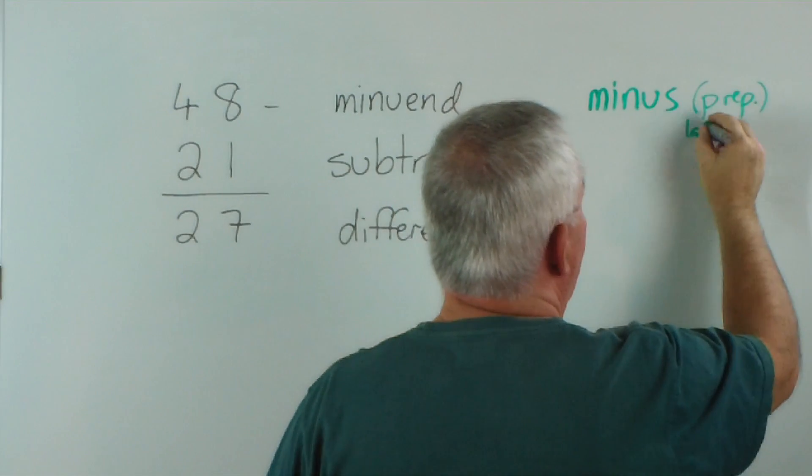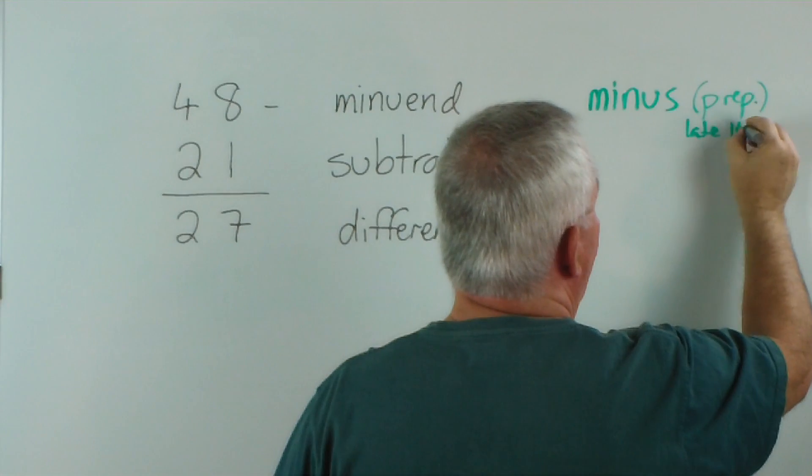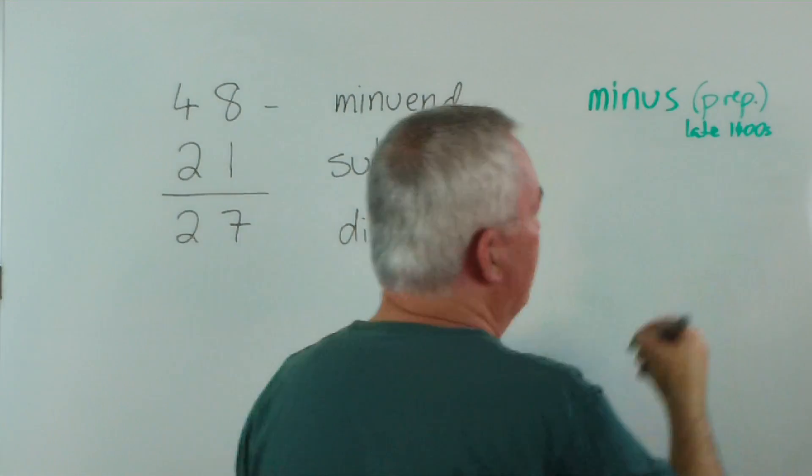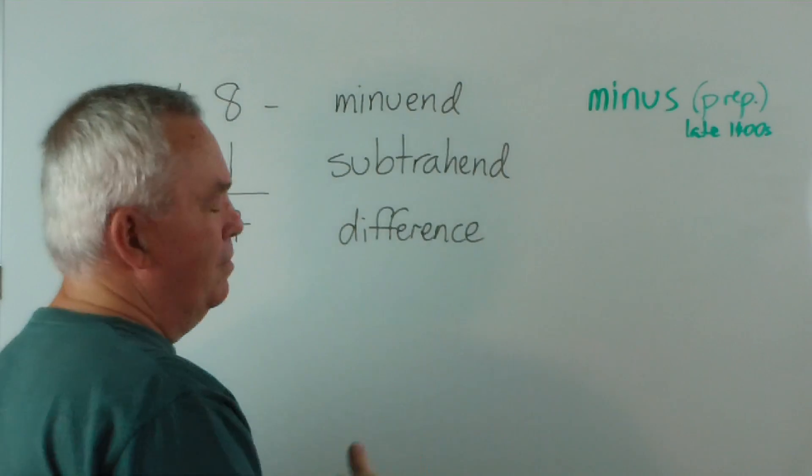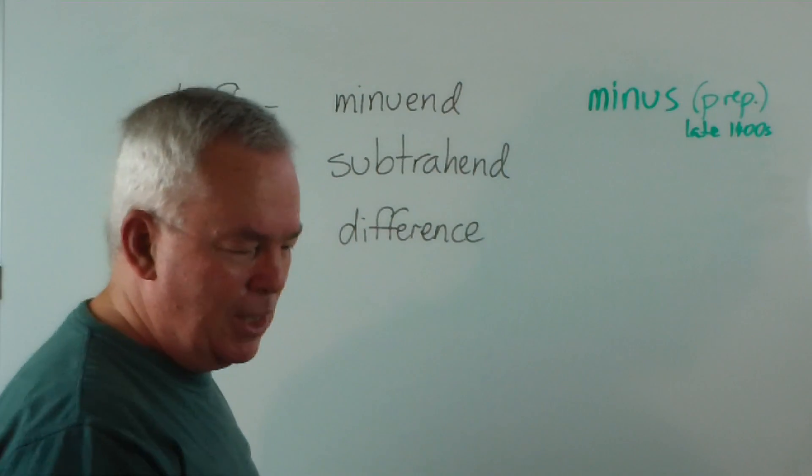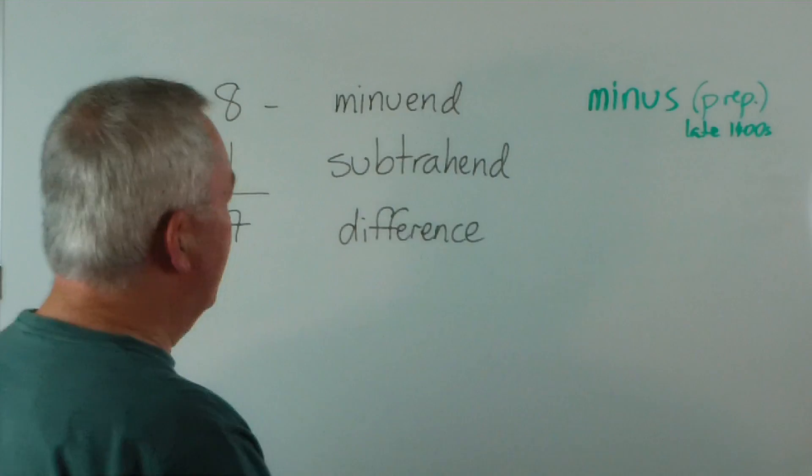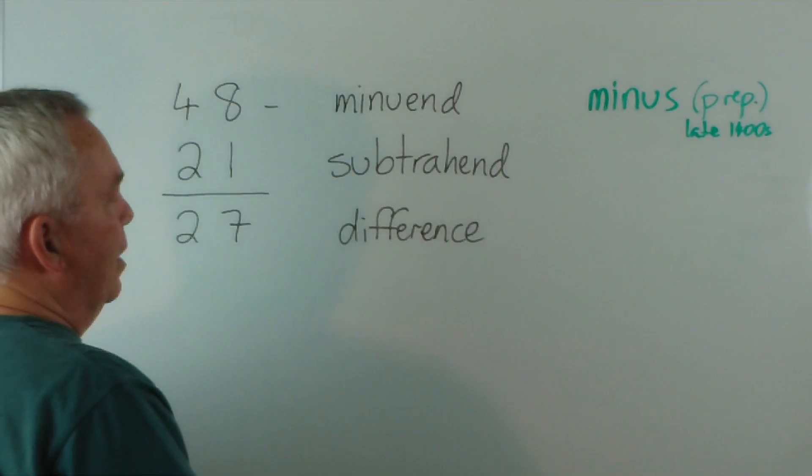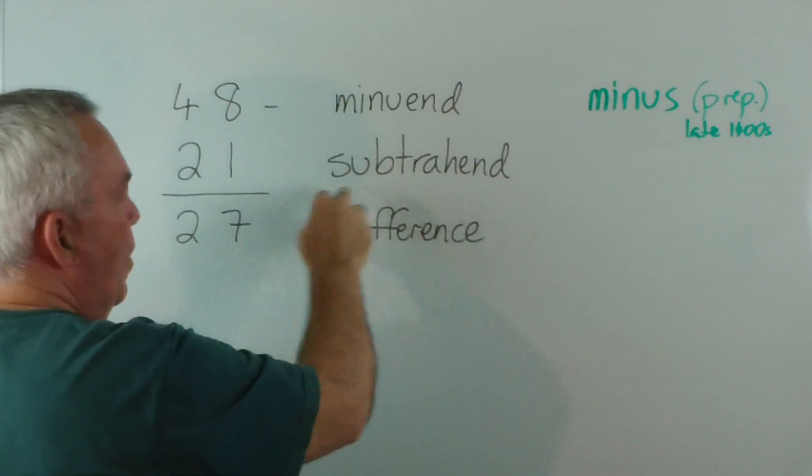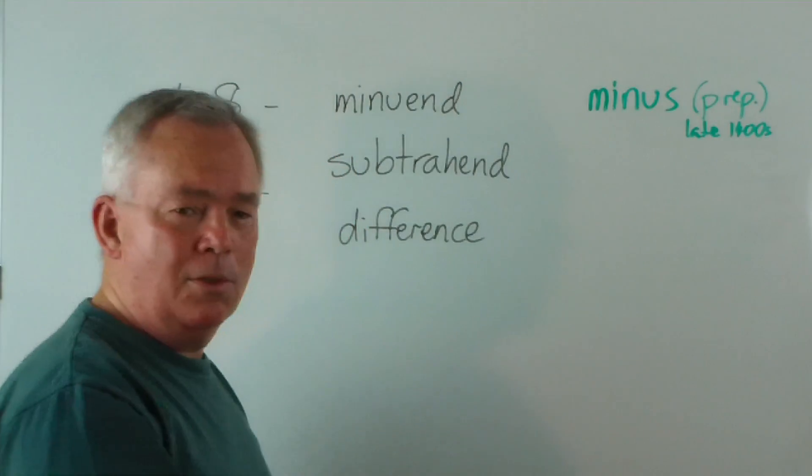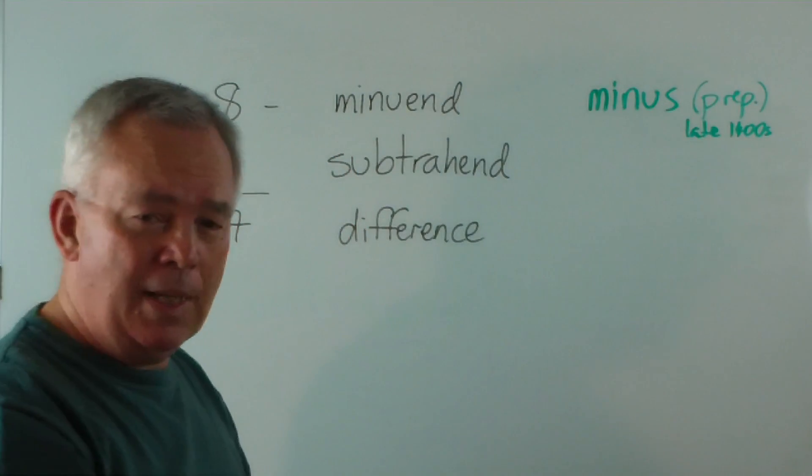So I'll write that here. Late 1400s or the late 15th century. Early Renaissance, just before the Reformation and so forth in Europe. So we would say 48 minus 21. And that was how the term was used. That's how it's used today.